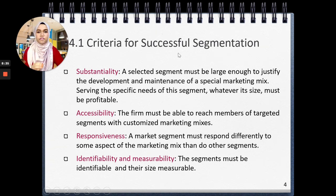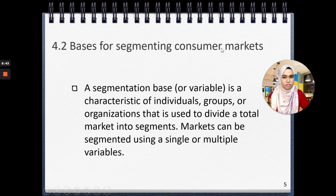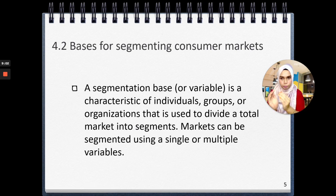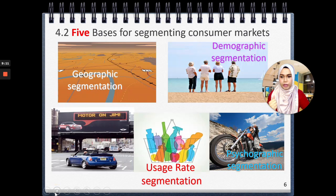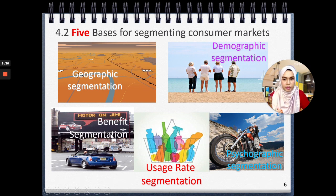Next we move to Section 4.2 — the basis for segmenting consumer markets. A segmentation base or variable is the characteristic of individuals, groups, or organizations used to divide a total market into segments. Markets can be segmented using a single or multiple variables. There are five bases for segmenting consumer markets: geographic, demographic, benefit, usage rate, and psychographic segmentation.